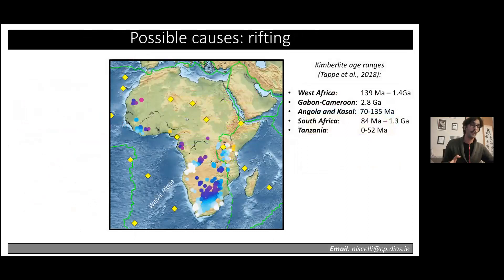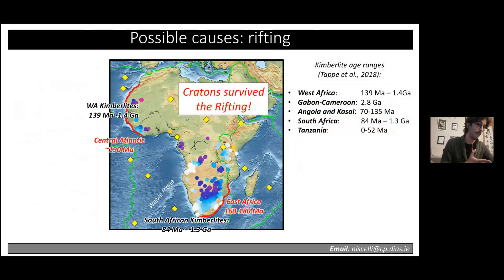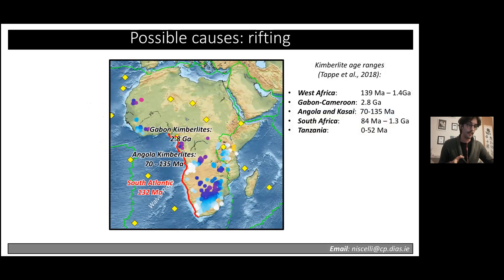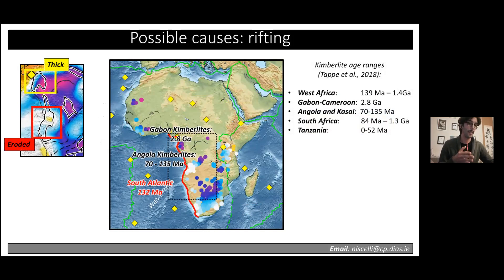Looking at rifting, we correlated the approximate ages of kimberlites with the ages of rifting. For the central Atlantic and southeast Africa rifting, the kimberlites are actually younger than the rift age, indicating the cratons survived the rifting. In the south Atlantic, Angola kimberlites are co-eval with the Atlantic opening, but comparing the adjacent Gabon-Cameroon and Angola cratons — both flanking the rift axis — shows they have very different thicknesses, indicating the rift itself cannot be the cause for the destruction of only one of them.